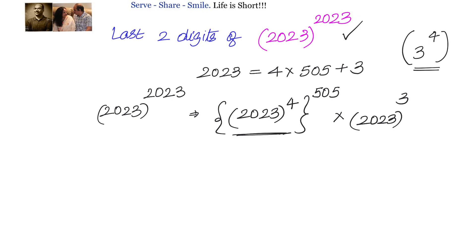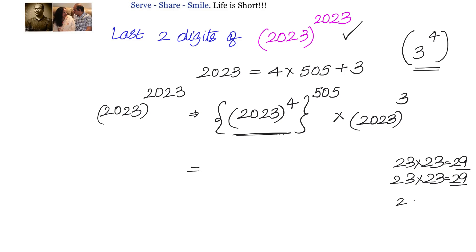Now we know this term will end with 1, so let's find its last two digits. We multiply 23 four times, taking only the last two digits each time. 23 × 23 = 529, take last two digits: 29. Again 23 × 23 ends with 29. Now 29 × 29 = 841, taking only the last two digits gives 41. So 2023^4 ends with 41.